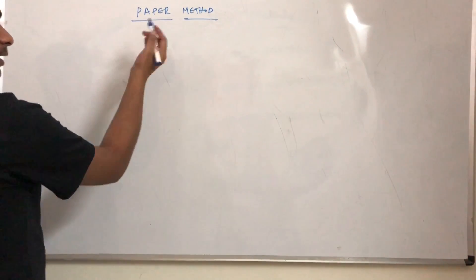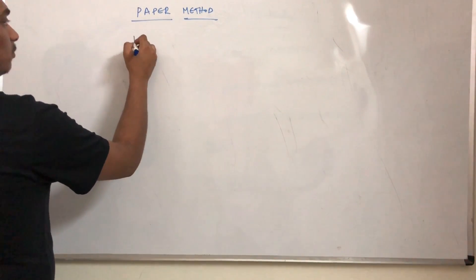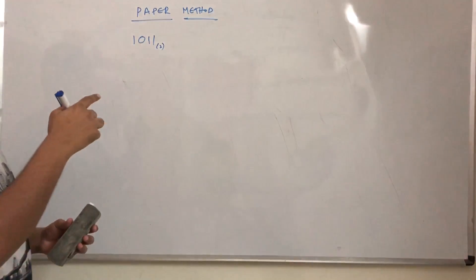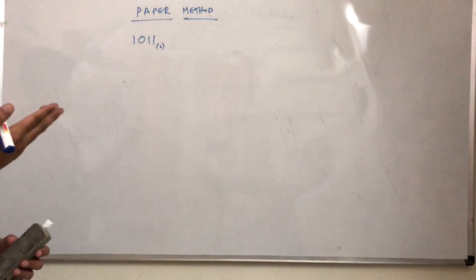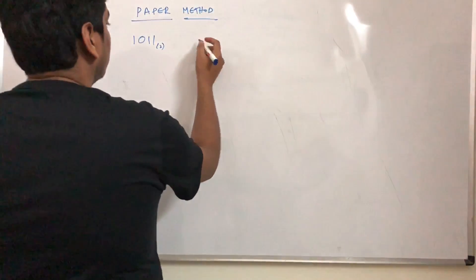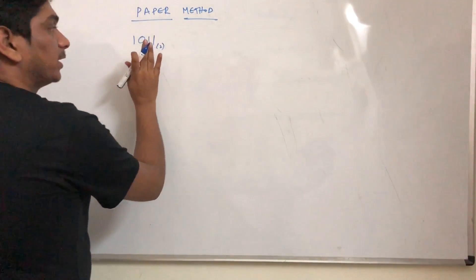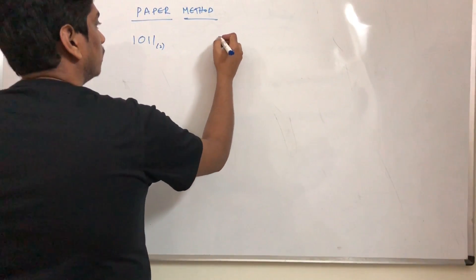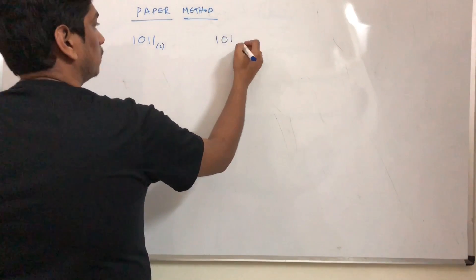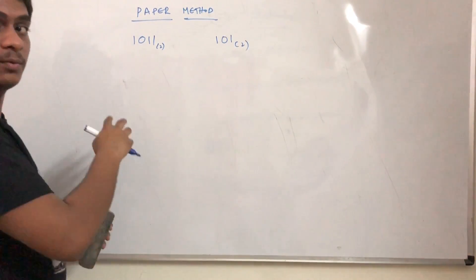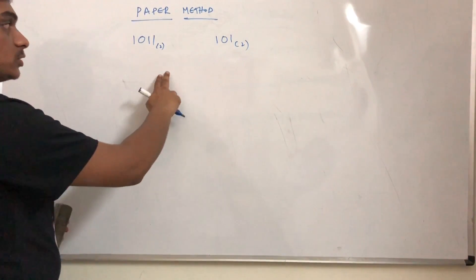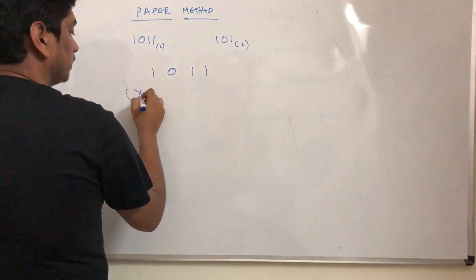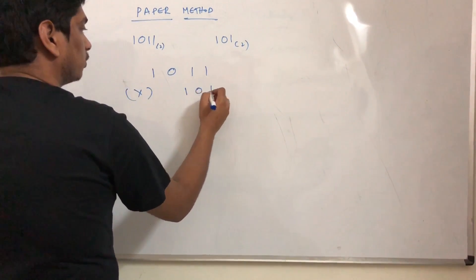Pick up two binary numbers — say 1011. I no longer have to write base two for you; you know by looking at the digits. So I want to multiply 1011 with 101. I want to multiply this with this. So 1011 is multiplied by 101.